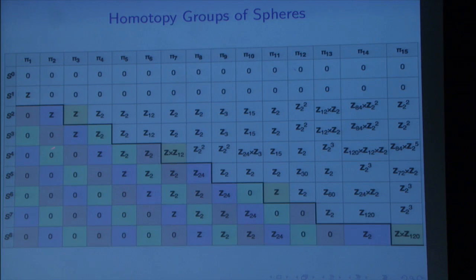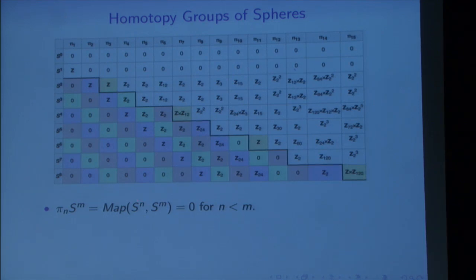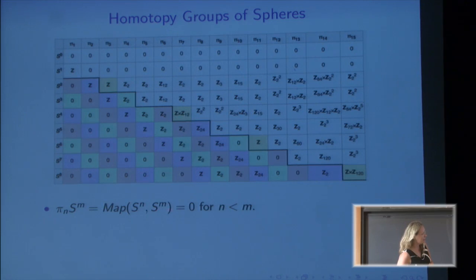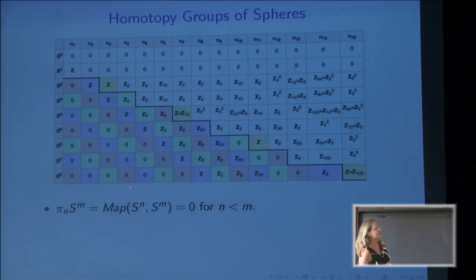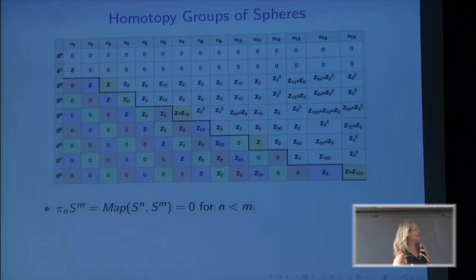One thing we notice right away about this table is there's a bunch of zeros here in the lower left corner. For example, π₁ of S^3 and π₂ of S^3 is 0, and that's true in general. If you're trying to map a smaller dimensional sphere into a larger dimensional sphere, there is no non-trivial ways to do that. If you try to read this table in rows, there's really no pattern, no structure. The groups appear more or less randomly. This first non-zero row consists of 0, then Z, Z, then Z mod 2, Z mod 2, then Z mod 12 for some reason, so there's no sense in reading this table in rows or columns.